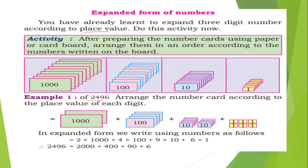Example: 2,496. Arrange the number cards according to the place value of each digit. Here, 2,000 cards — 2 are there. 100 cards — 4 are there. 10s — 9 are there. Units (ones) — 6 are there. This is 2,496.